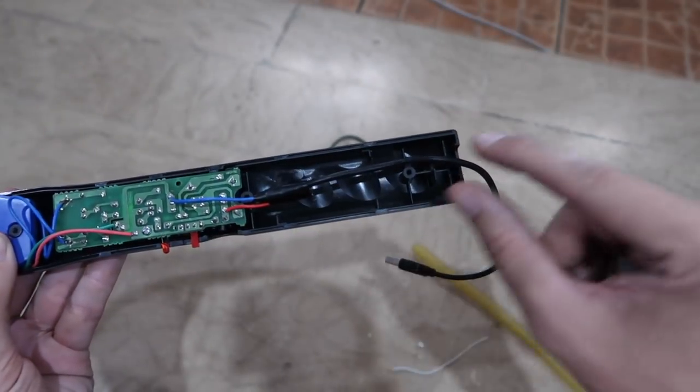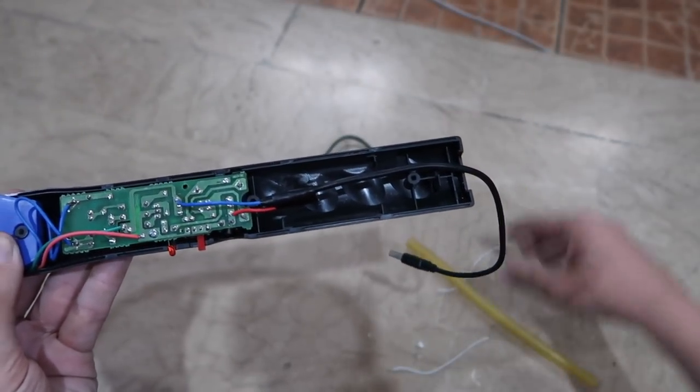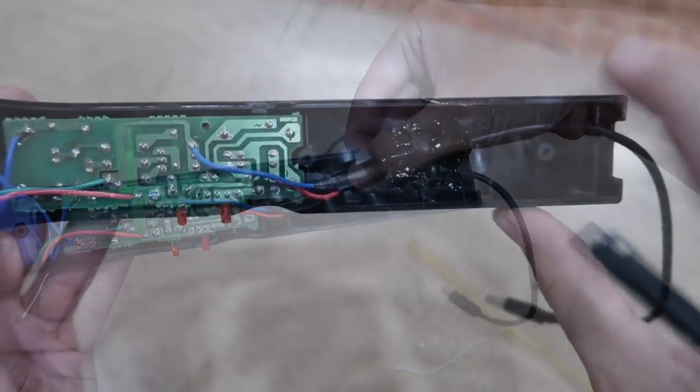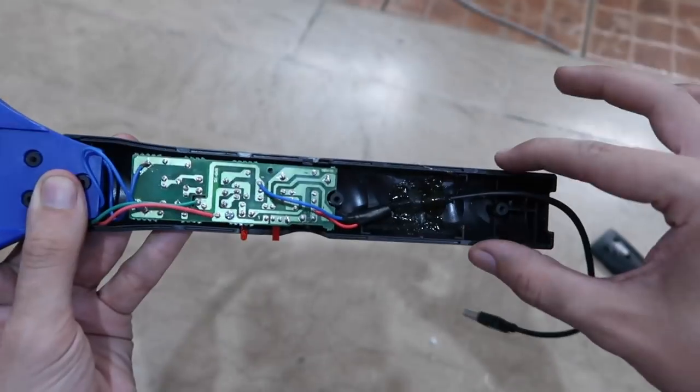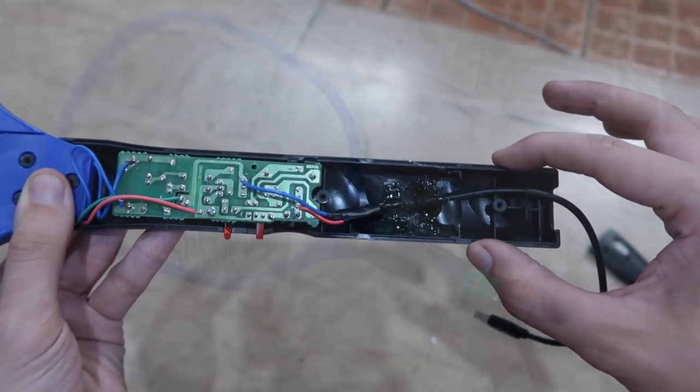So now the wires have been taped up. What I'm going to do is use some hot glue to secure the wire in place and there you go. Now the cable is glued in place. We don't have to worry about it getting pulled and we can put this back together again and test it out.